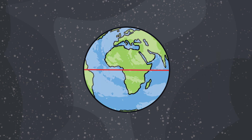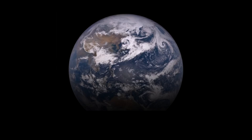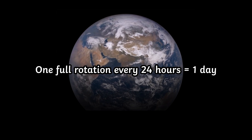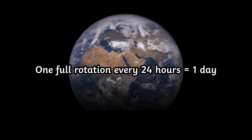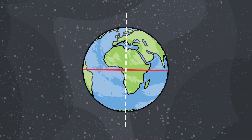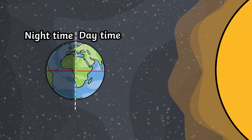There is another imaginary line going through the middle of the Earth called the Earth's axis. The Earth spins on this axis once every 24 hours, and this is what gives us night and day. Daytime is when our side of the Earth is facing the sun, and night time is when we are facing away from the sun.